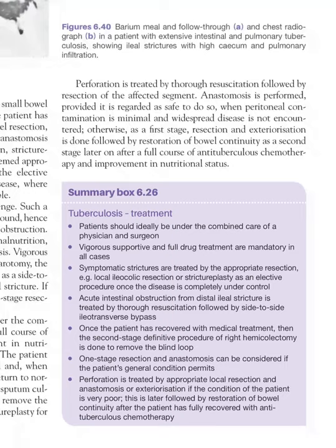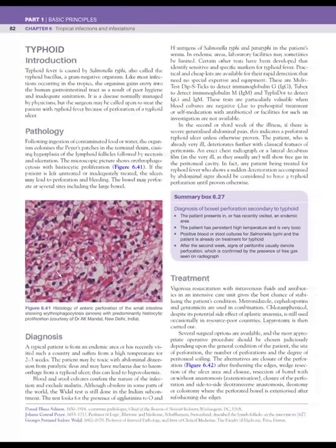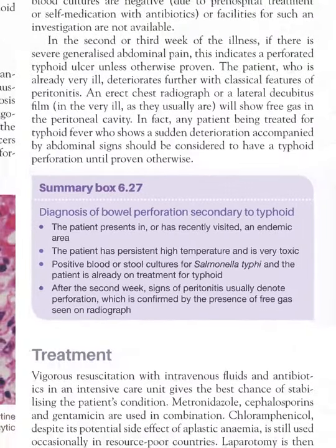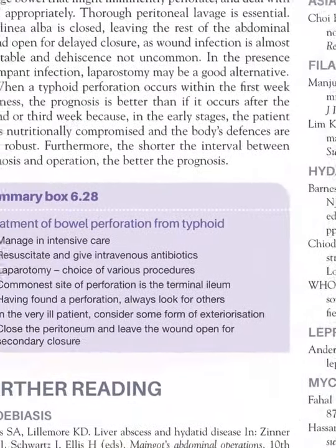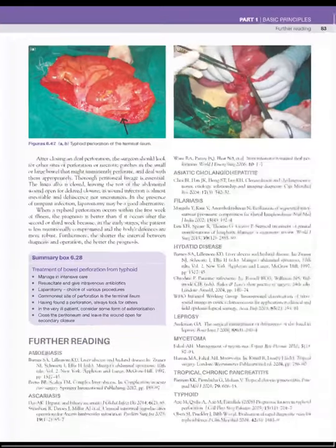Finally, in typhoid, the surgical importance is the treatment of perforation, which mainly occurs in the second to third week. If a patient with typhoid suddenly develops abdominal pain, peritonitis due to typhoid ulcer must be ruled out. Treatment involves resuscitation first, antibiotics, then laparotomy. The options include repair of the perforation, anastomosis, or exteriorization as required.